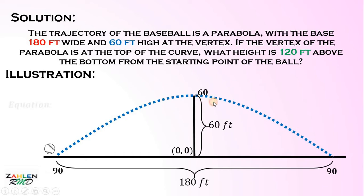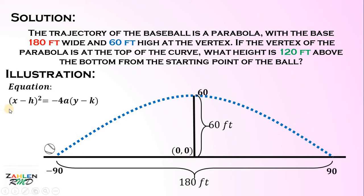What we're going to do is make an equation of this parabola representing the trajectory of the ball. The parabola opens downward, so the general form is x minus h squared equals negative 4a multiplied by y minus k, where h and k is the vertex. If you encounter a parabola that opens upward, change the negative sign into a positive sign.